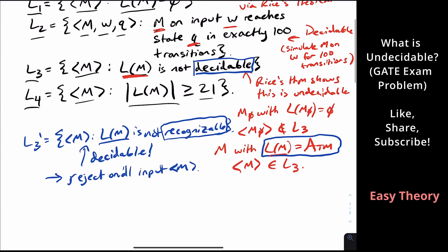And so what about L4? So L4 is again a property of Turing machine languages. The only criterion to be in there is dependent on the language. And if you happen to have the same language, then you either both have 21 strings or more or fewer. So it is a property of Turing machine languages. But is it non-trivial?